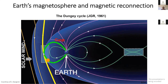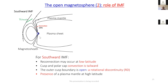During southward IMF, reconnection is expected at the dayside, driving convection in the magnetosphere towards the tail. For southward IMF, reconnection may occur at low latitudes; in the cusps and polar cap, convection is tailward. The outer cusp boundary — the magnetopause at the outer cusp boundary — is a rotational discontinuity with plasma flowing through it at all times. You also expect the presence of a plasma mantle at high latitudes near the lobes, formed by dispersion of ions from the dayside reconnection.